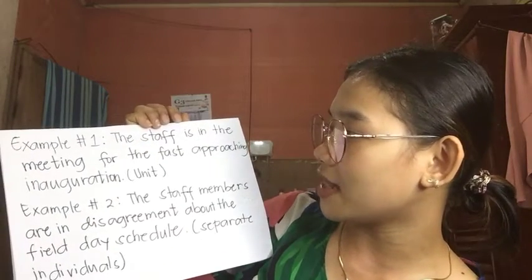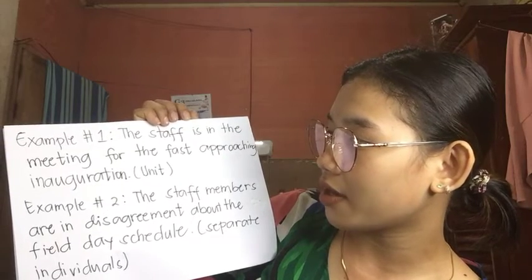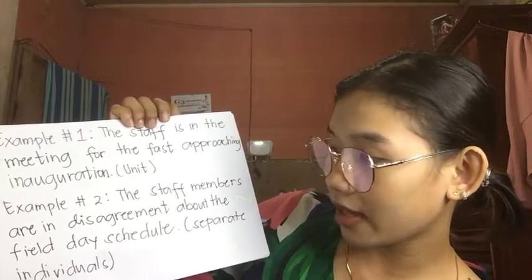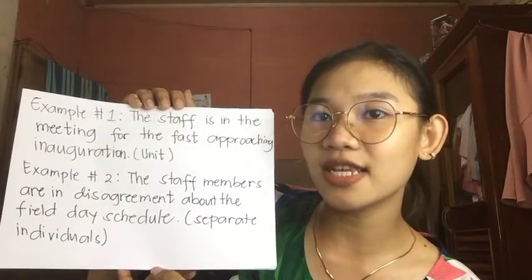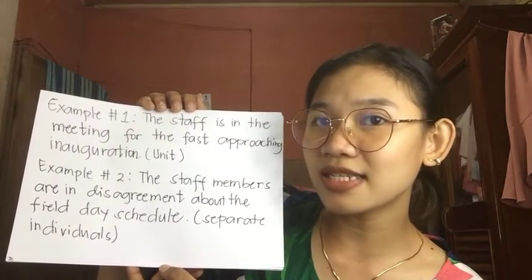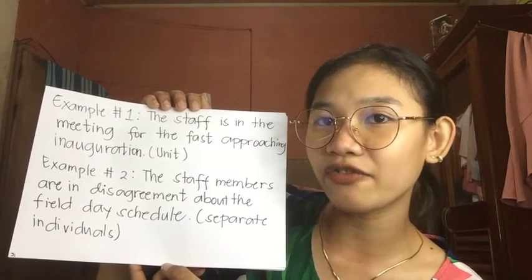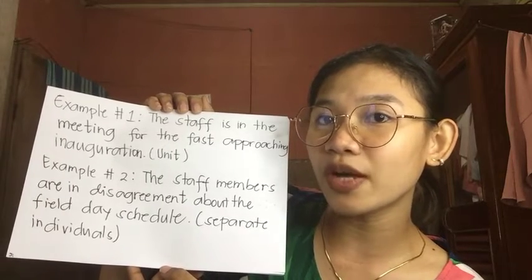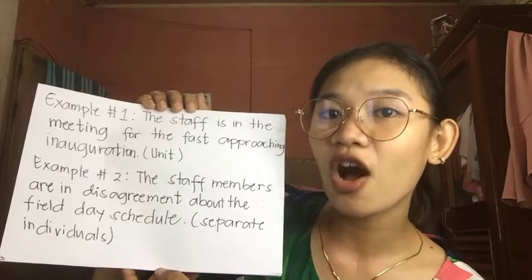Rule number fifteen: collective nouns like team, staff, group, family, crowd, army, etc. require a singular verb if the members are thought of as acting collectively, and a plural verb if the members are thought of as acting separately. For example, 'The staff is in the meeting for the fast-approaching inauguration' uses singular verb 'is.' While 'The staff members are in disagreement about the field day schedule' uses plural verb 'are,' referring to each member separately.